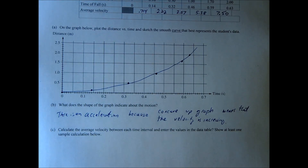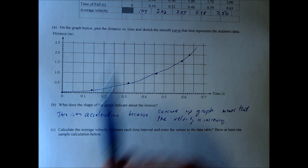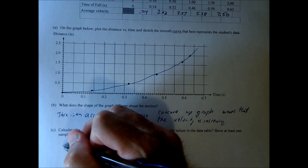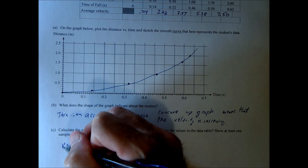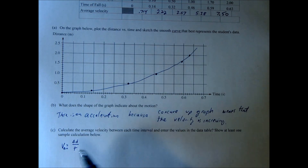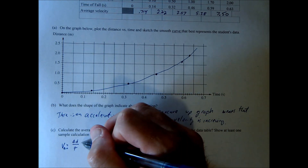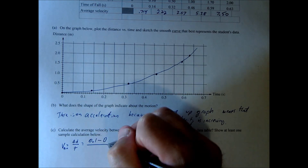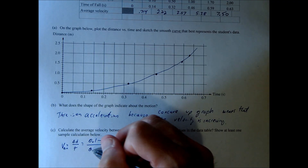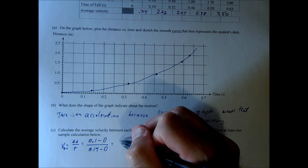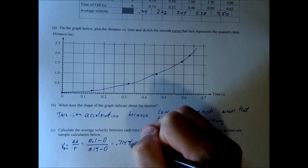Question C asks us to find the average velocity between each time interval. For example, the first time interval is between 0 and 0.14 seconds. Average velocity is displacement over time for each interval. For that first one, the displacement is 0.1 minus 0, divided by the time 0.14 minus 0. That gives you 0.714 meters per second.